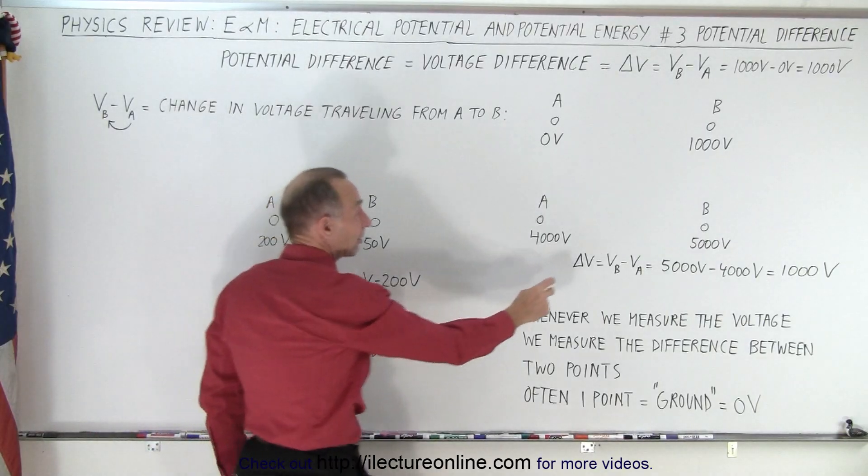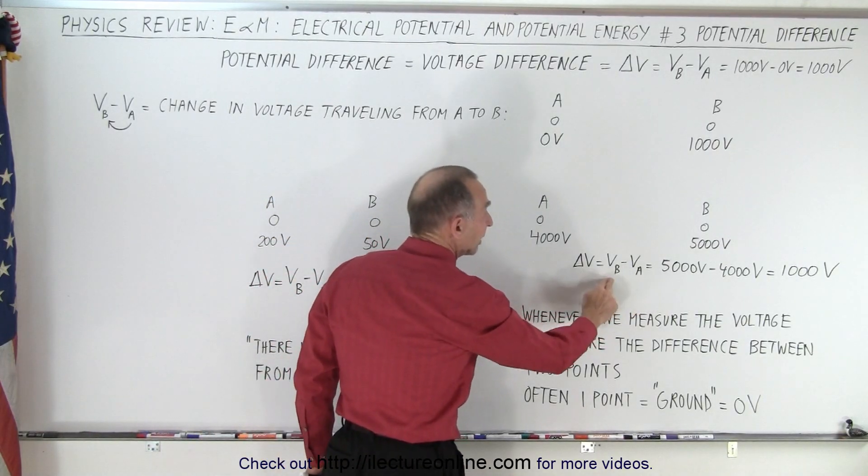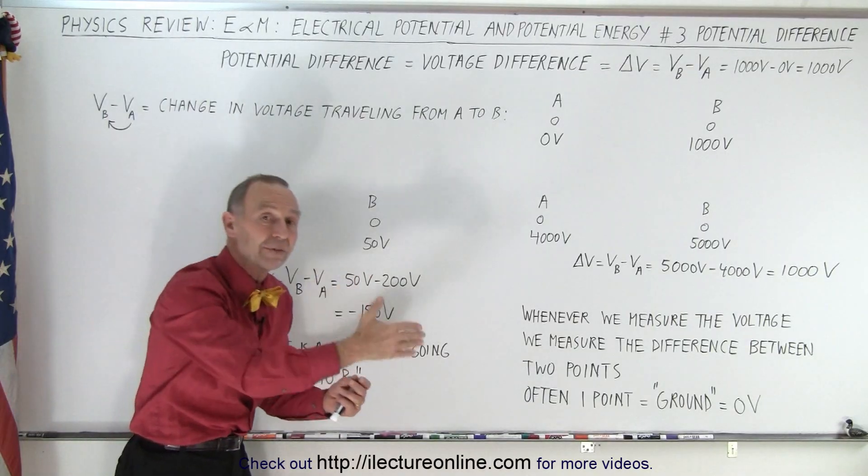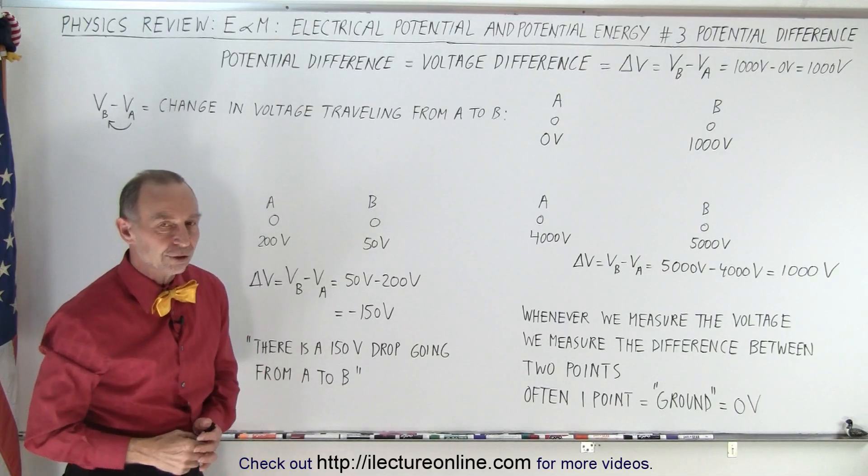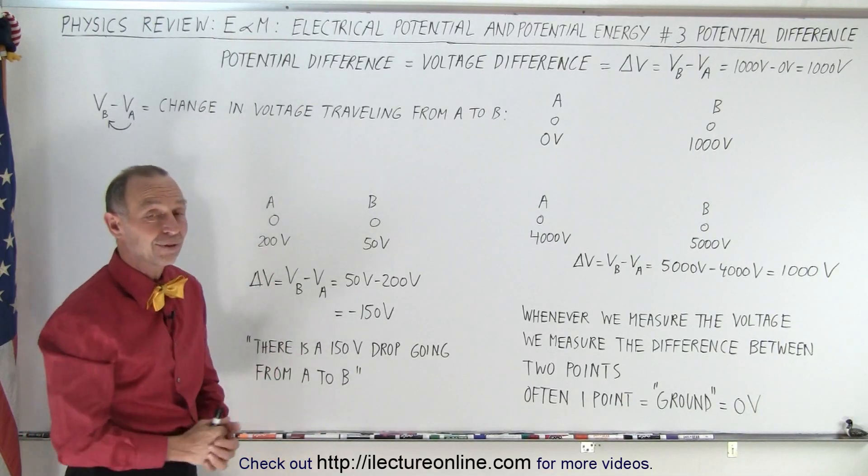Now notice, delta V can be VB minus VA or VA minus VB, depending upon which way we want to travel to see that change in voltage. And that is how it's done.